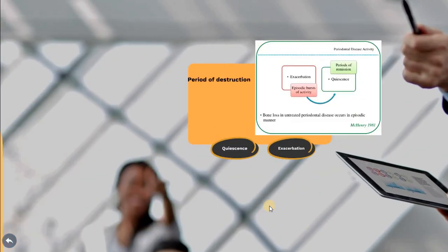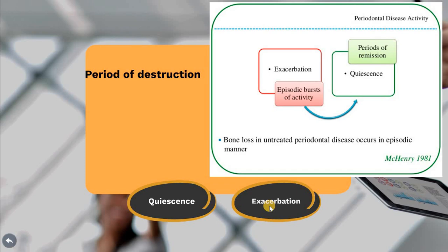Regarding the period of destruction — as discussed in the relation of the pocket to the alveolar bone in the previous lecture — periodontal disease has site specificity. We have exacerbation and quiescence periods: a period of remission and a period of activity. In each of these periods, a different mechanism occurs while the disease is still present.